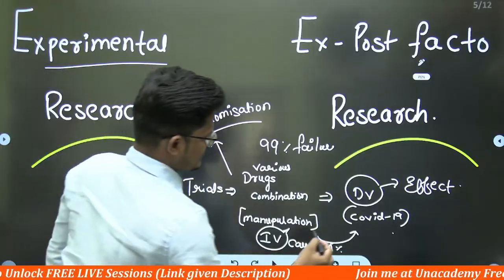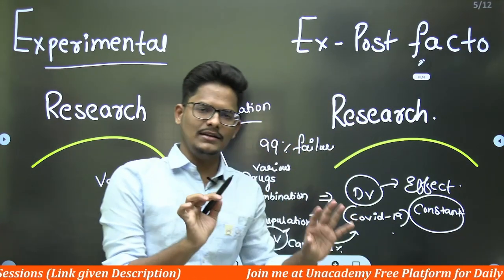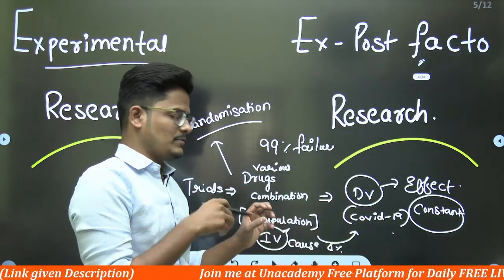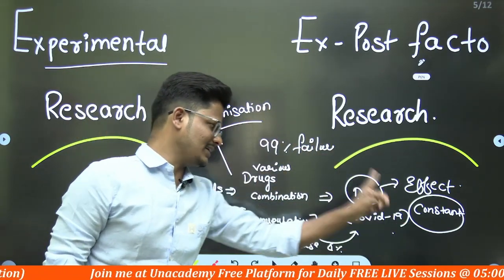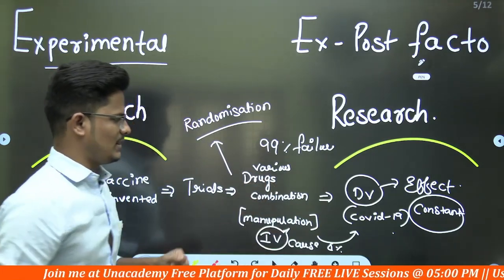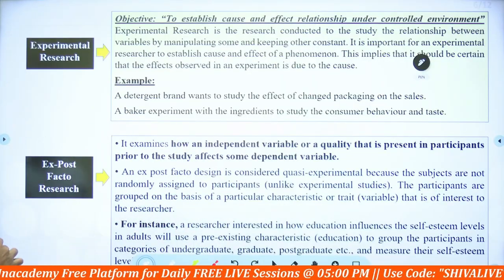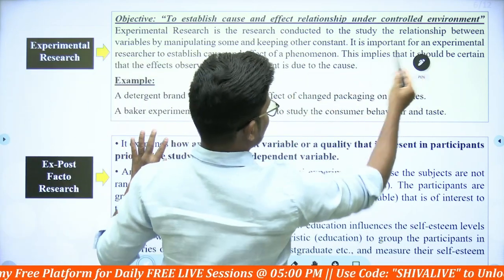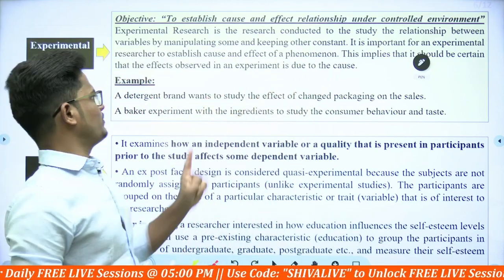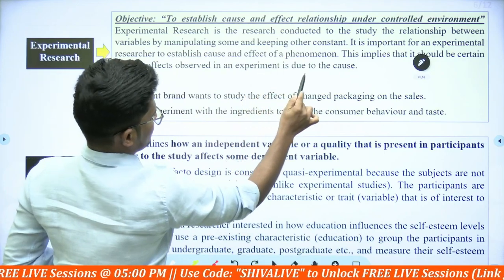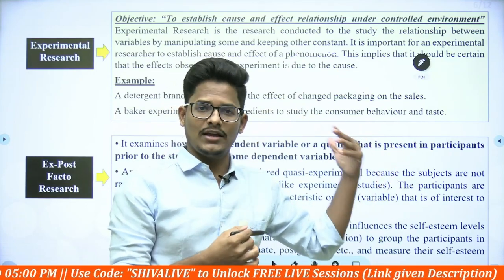What is kept constant? The dependent variable is constant. For example, protection from COVID-19 virus is the constant objective — that does not change. Whereas how many independent variables we manipulate to achieve that objective is the task of experimental research. It is important for experimental research to establish a cause and effect phenomenon — meaning the observed effect must be due to the independent variable only.